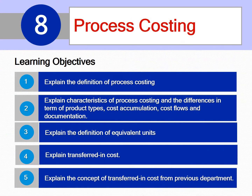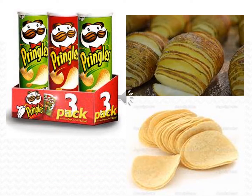Learning objectives: 1) Explain the definition of process costing. 2) Explain characteristics of process costing and the differences in terms of product types, cost accumulation, cost flows, and documentation. 3) Explain the definition of equivalent units. 4) Explain transferred-in cost. 5) Explain the concept of transferred-in cost from a previous department.